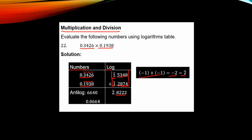We check the antilog of bar 2, 0.8222. In the antilog table, we are interested in the decimal part. Bar 2 means you add two zeros before the first non-zero digit, giving a final answer of 0.0664.